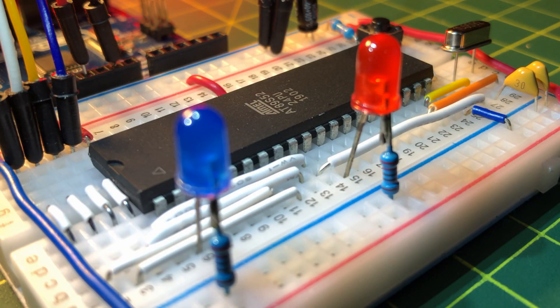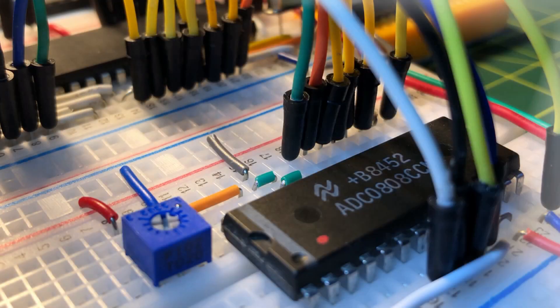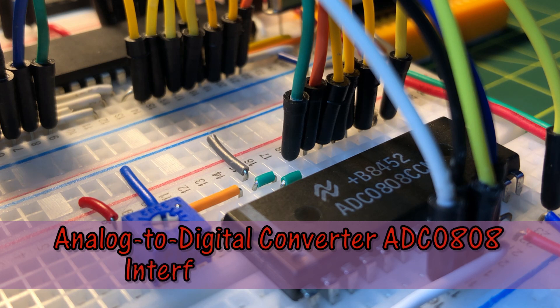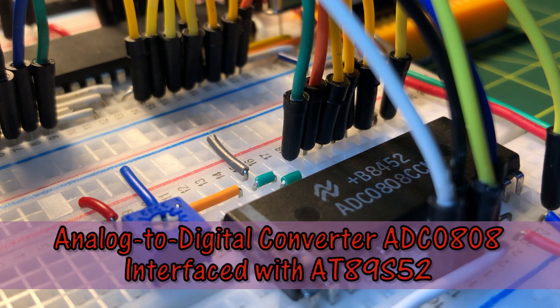One of the limitations of microcontroller AT89S52 is no built-in analog-to-digital converter. In this video, analog-to-digital converter ADC0808 is interfaced with AT89S52 to enable up to 8 analog inputs.